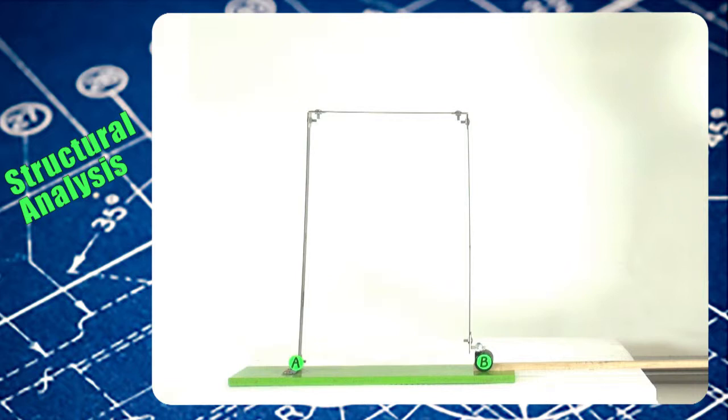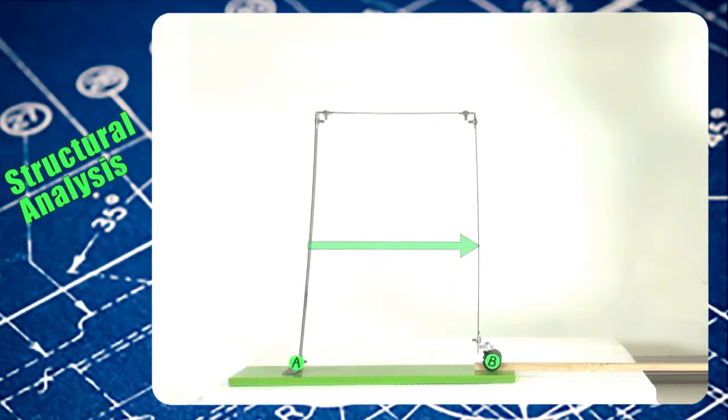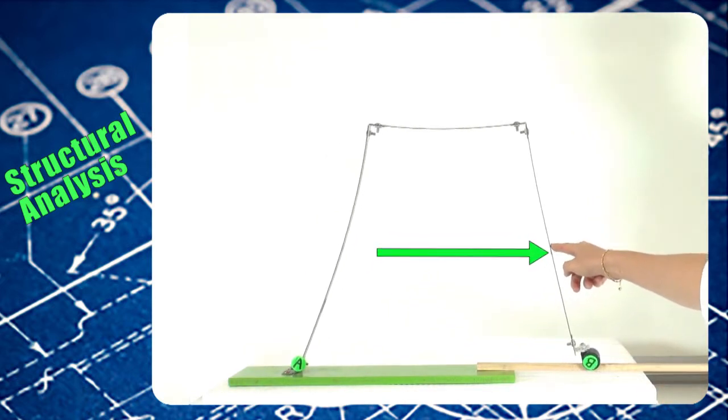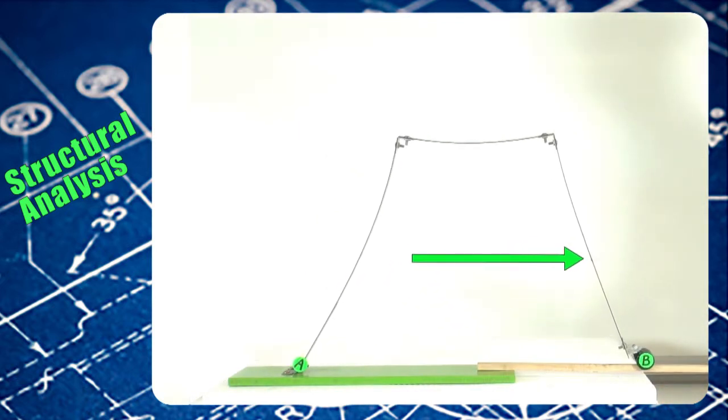The connections between the beam and columns are rigid. If we apply a horizontal force at this point on the column, we can see how the frame deforms.